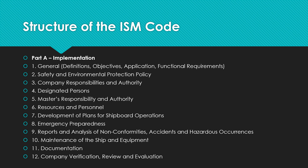The basic structure of the ISM Code is divided into two parts. Part A is the implementation part. It starts with Chapter 1, which covers definitions — what the code means, what 'company' means, the owner of the ship, and the meaning of administration, safety management system, document of compliance, and safety management certificate. It also provides the objectives of the code, its requirements, and to which types of ships the code is applicable.